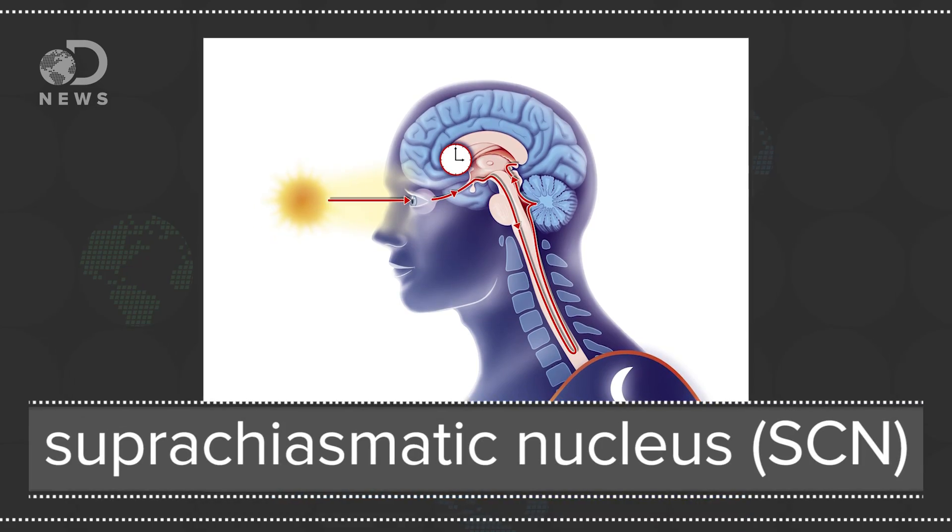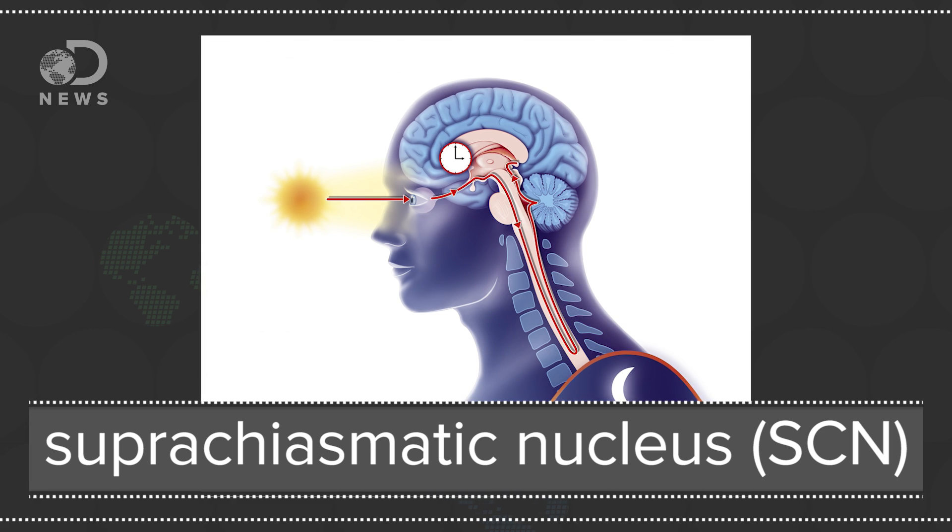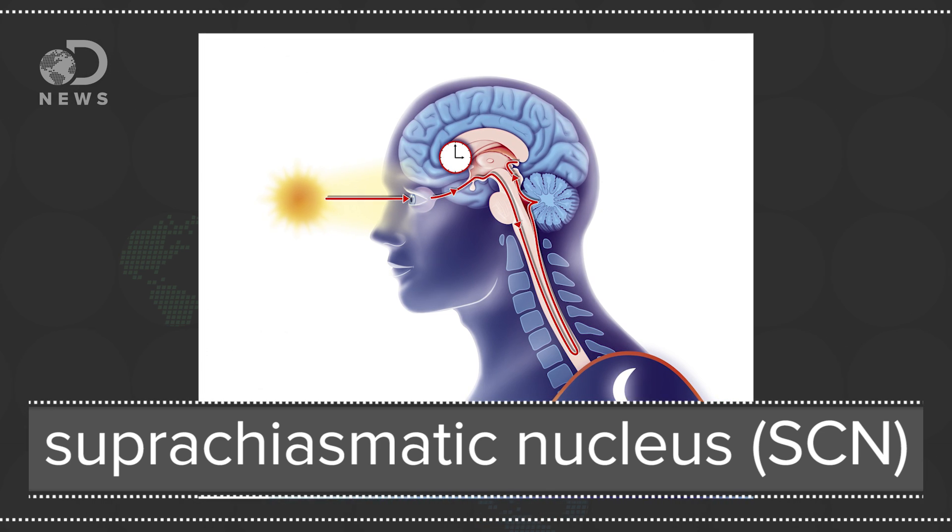As you know if you've watched DNews regularly, the hormone melatonin keeps your sleep-wake cycle in sync, which drives your circadian rhythm. The suprachiasmatic nucleus in the hypothalamus cuts melatonin production when there is more light, and amps it up when there is less.